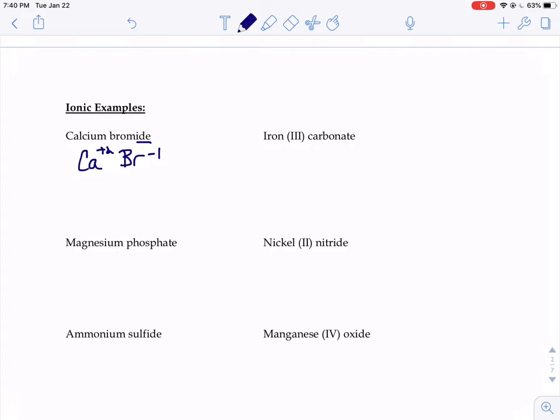Now we have to make sure that our positive and negative charges balance. In order to do that, we would need two bromide ions to cancel out the positive two charge of our calcium. So our final answer would be CaBr little two. This time we do a subscript. The subscripts tell you how many of each piece you need.